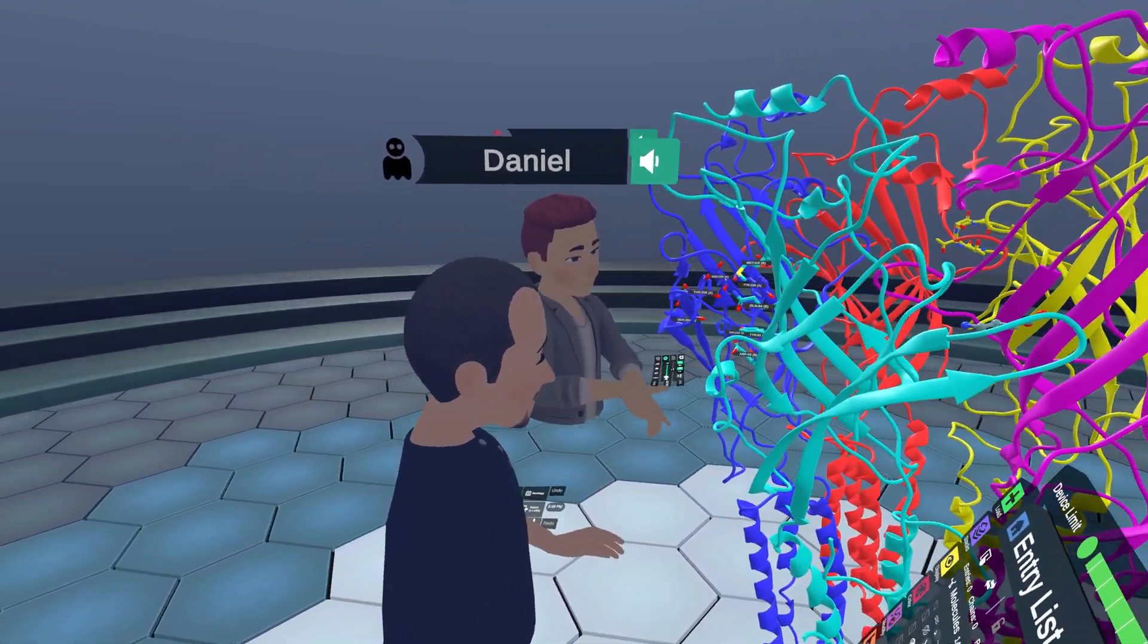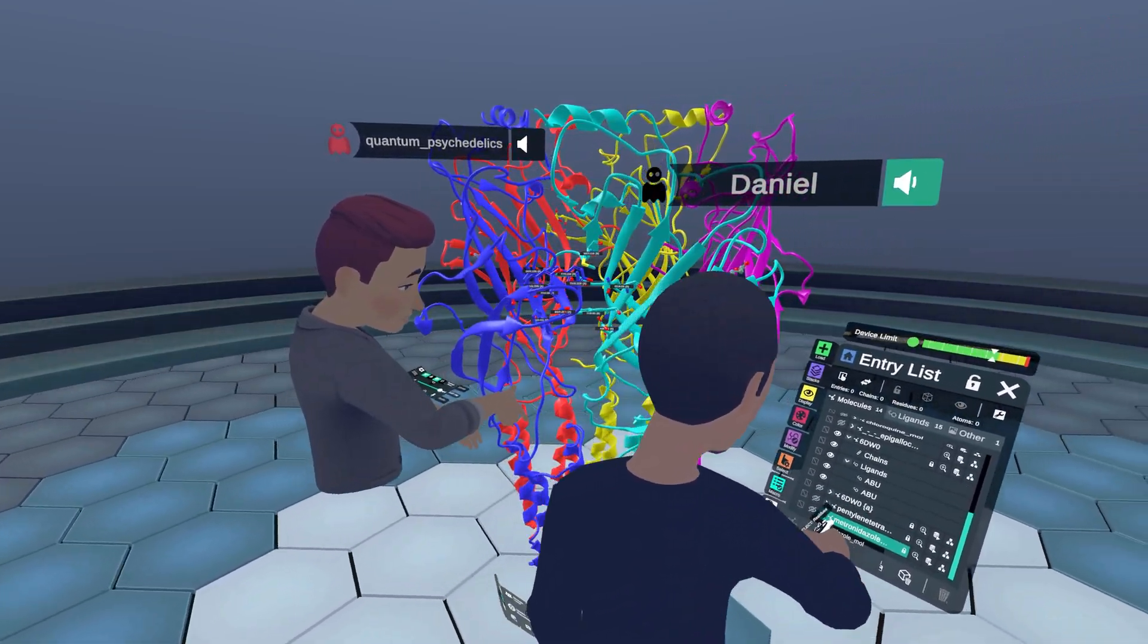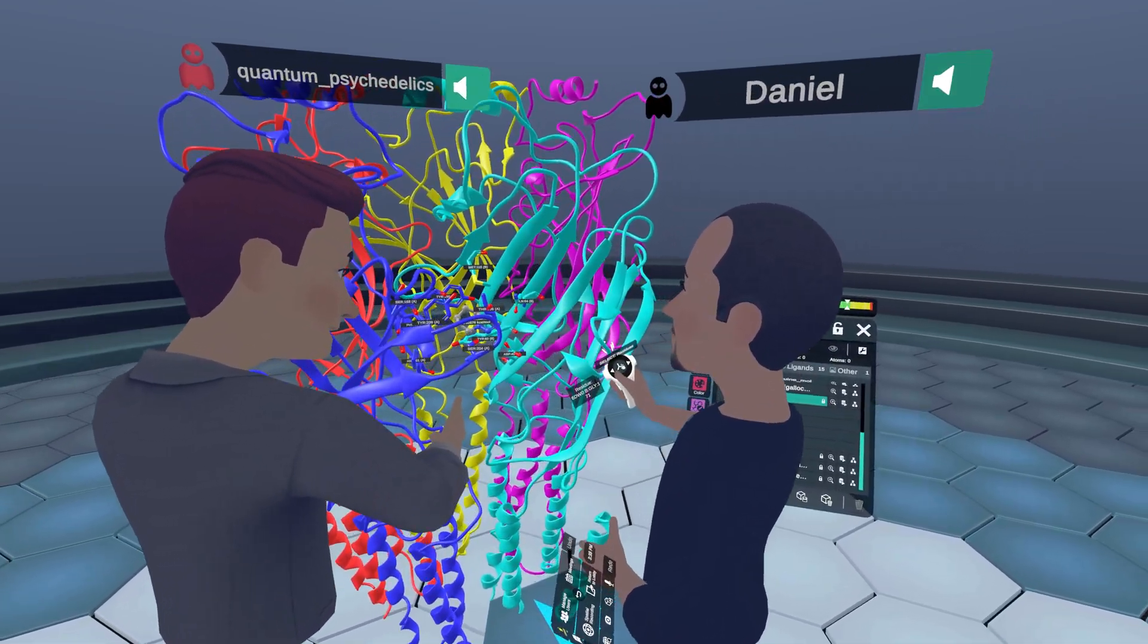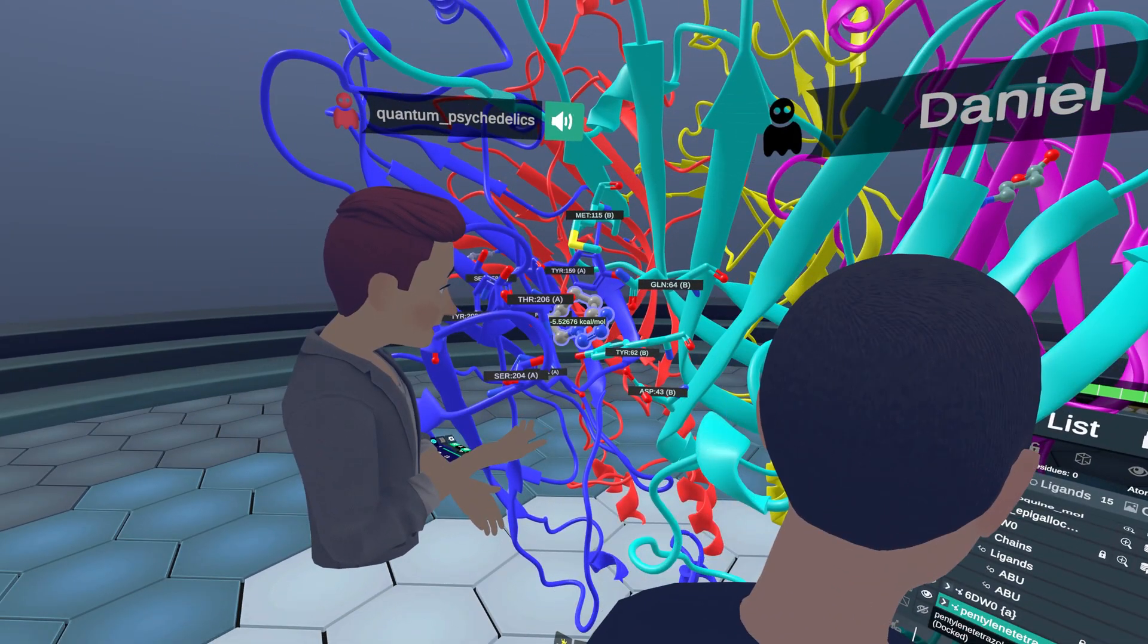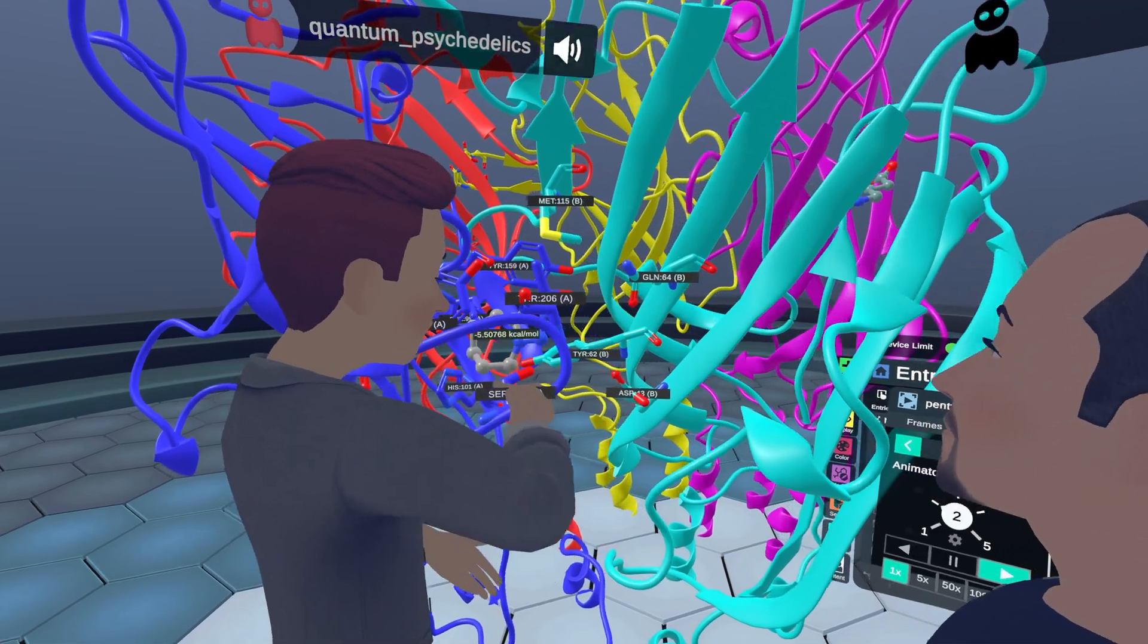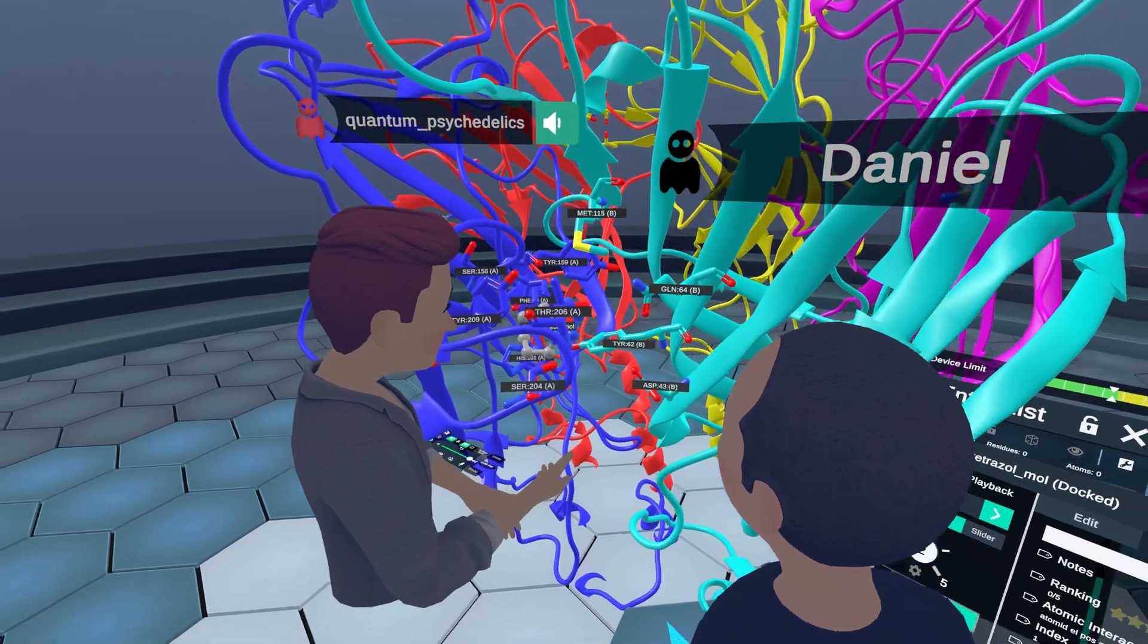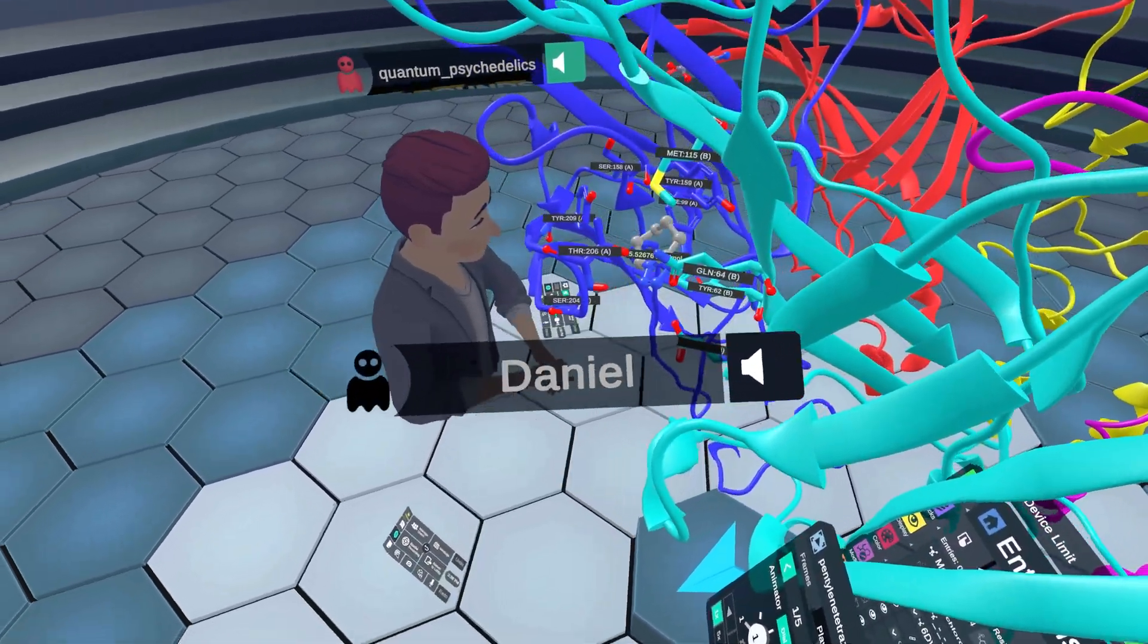And I'm going to show the docked results we got with pentilene tetrazole, however you pronounce that. It's pentilene tetrazole, something like that. But yeah, like what I was saying is interesting. For example, this molecule is tiny. This is a very small molecule. And it binds to the GABA binding site. That makes sense because it's also a small molecule, not as small as GABA, but it is considered to be a small molecule.